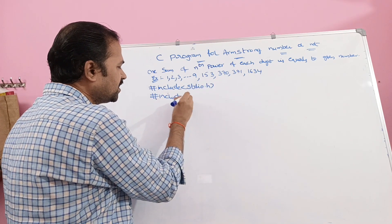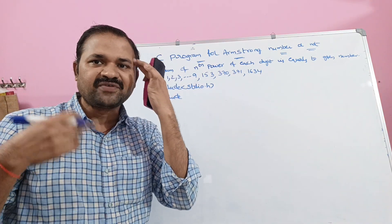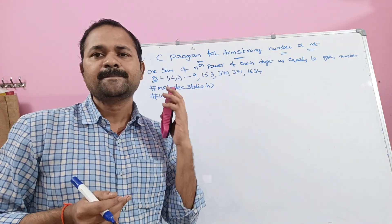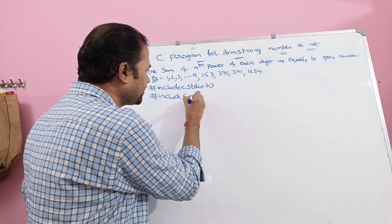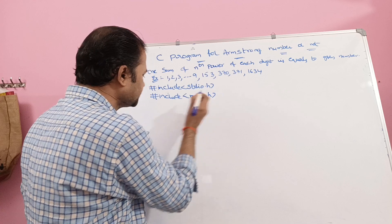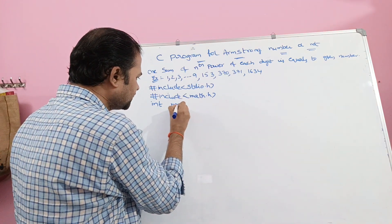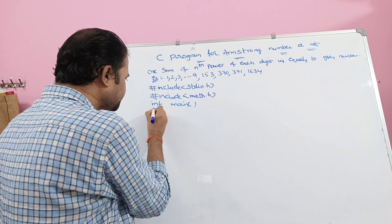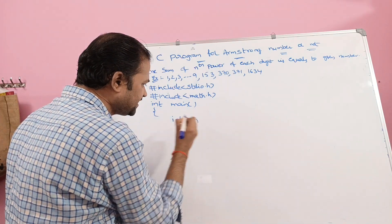Next, in order to calculate the power, we have to use the pow function. The pow function is available in math.h, so hash include math.h. Next, int main. The input is n, so int n.